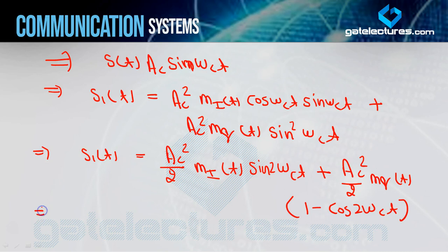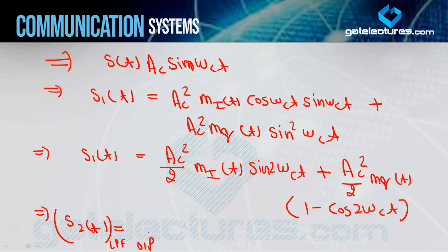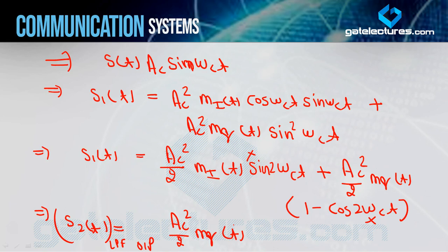Ab agar main aise low pass filter se pass karun, aur iska naam de dun H2(t) — low pass filter output — to filter ne phir se aise design kiya hai ki sirf message frequency ko pass kare, higher frequency ko pass na kare. To dekhiye: 2FC ke terms reject honge, aur 2FC wale doosre term bhi reject ho jayenge. To jo aapka answer bachega: (AC²/2)·m_q(t). Yahan se aapka jo second message signal tha — m_q(t) — wo bhi recover ho gaya receiver ke output mein. To basically aap logon ne transmitter se m_i(t) aur m_q(t) ko ek saath transmit kiya tha by using quadrature carrier, aur receiver side par unhe recover bhi kar liya.